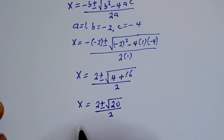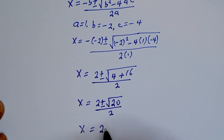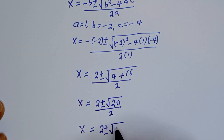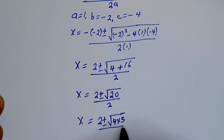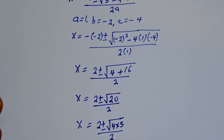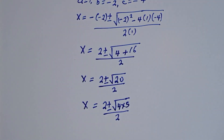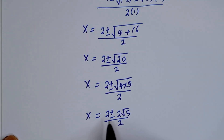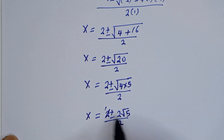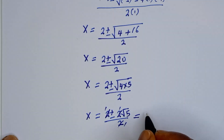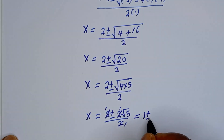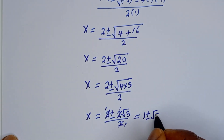Then x is equal to 2 plus or minus square root of 4 times 5, over 2. Simplifying, the 2 in the numerator and denominator cancel, giving x is equal to 1 plus or minus root 5.